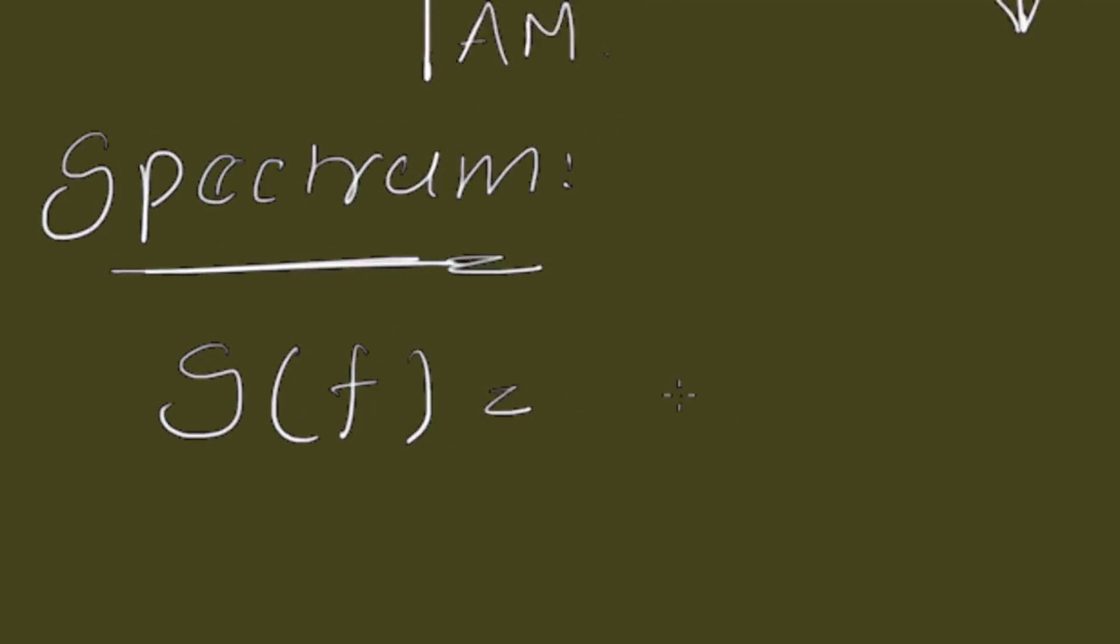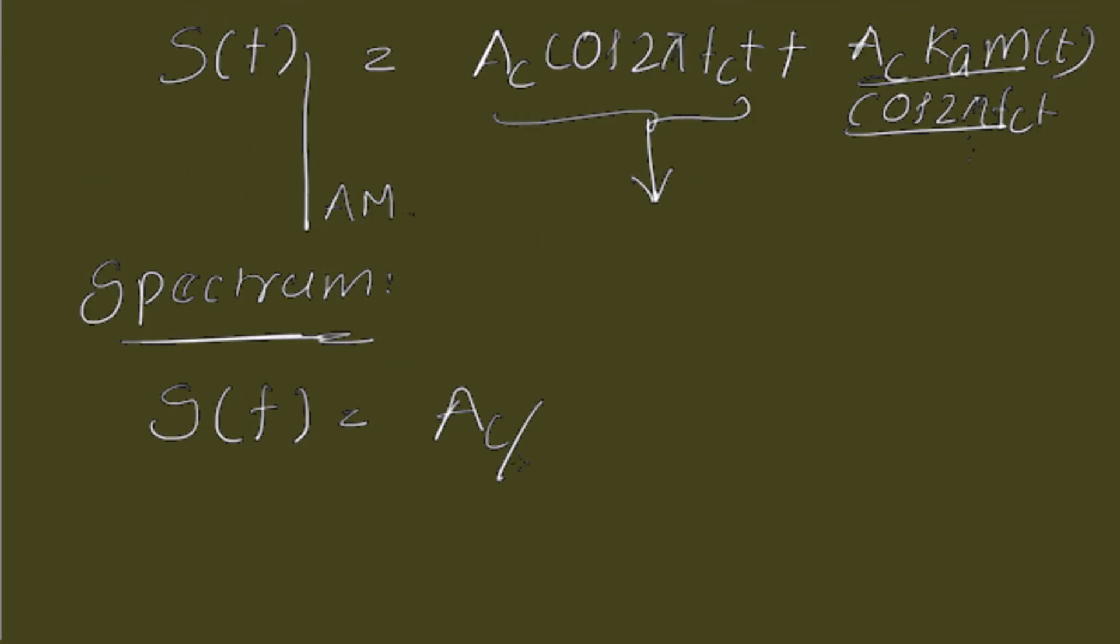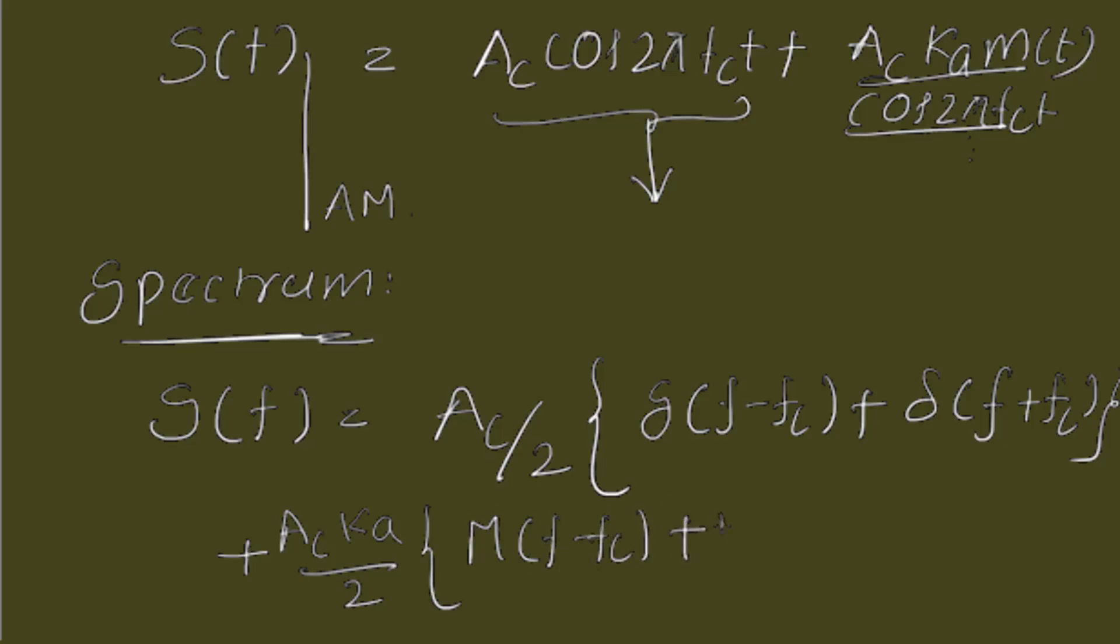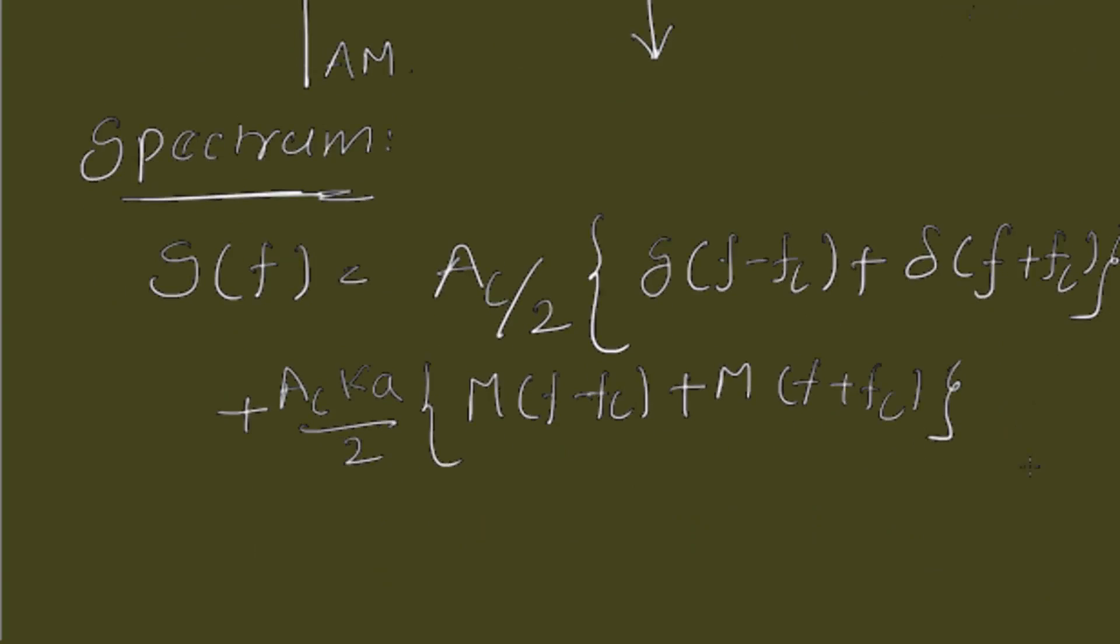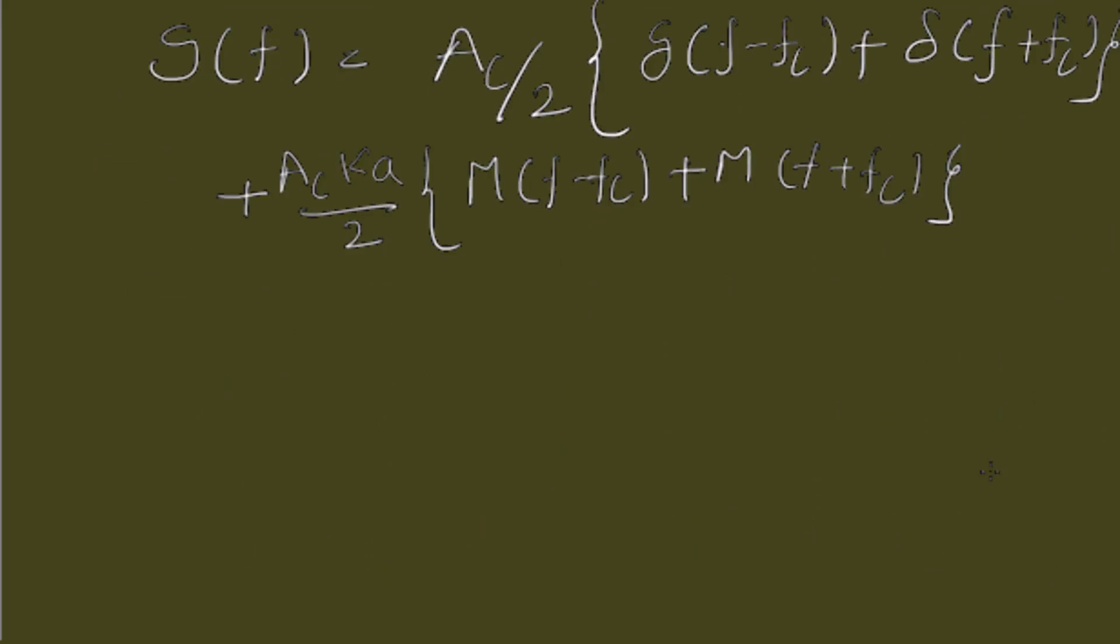If we apply the Fourier transform both sides, we will get expression like this. Ac/2 [δ(f-fc) + δ(f+fc)] plus Ac KA by 2 into M(f-fc) plus M(f+fc). So, now, let us draw the spectrum of this wave.